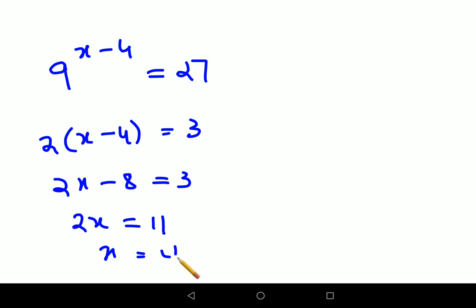Now very quickly, let's see if we had something like 9 raised to x minus 4 equals to 27. You would have done this directly: 3 raised to 2 the whole raised to x minus 4 equals to 3 raised to 3. So this would be 2x minus 8 equals to 3, so 2x equals to 11 because you are adding both sides by 8. So x is equal to 11 by 2.